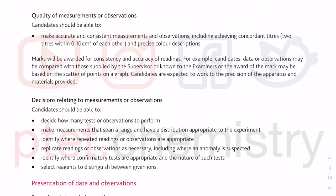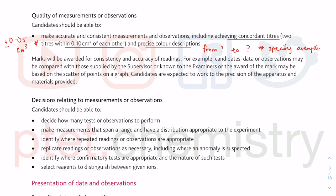Quality of measurements or observations: you've got to achieve concordant titres. Concordant titres must be within 0.10 cm³ of each other, because each of your readings was 0.05 cm³ accuracy. You cannot have greater than two times that. Precise colour descriptions: you've got to say from something to something — specify everything. Do not take chances. There is no marking scheme next to you. Instead, work systematically — that is the job of a chemist.